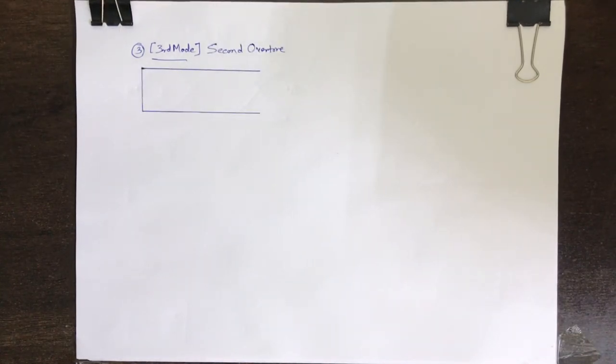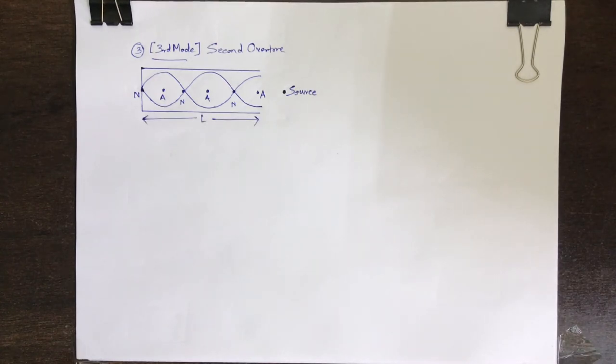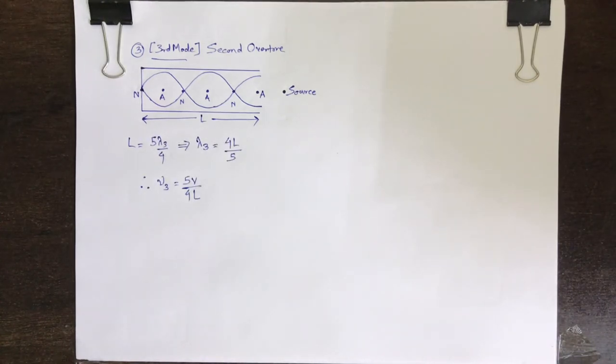Now, the third mode we have the second overtone. Let lambda 3 be the wavelength of the standing wave in the pipe. This mode of vibration is shown in the figure, where two additional antinodes and two additional nodes are there between the two ends of the pipe. Similar to the previous cases, we can calculate the respective values of L, lambda 3, and mu 3, which is equal to 5V upon 4L.